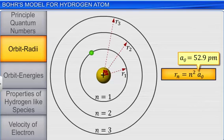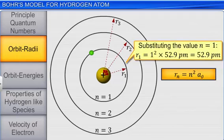This means that the smallest possible value of r, or the radius of the very first orbit where the sole electron of the hydrogen atom found in its ground state, is equal to 52.9 picometer. This radius is called Bohr's radius.